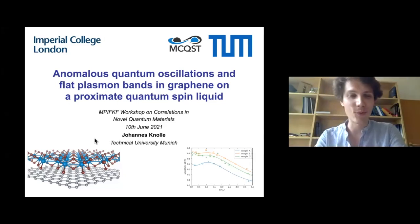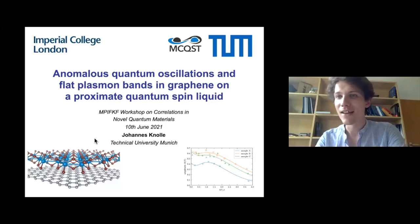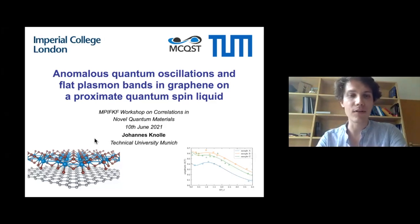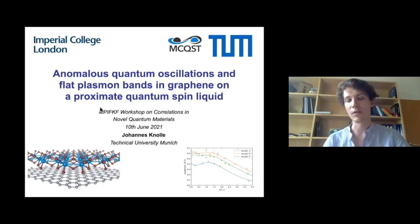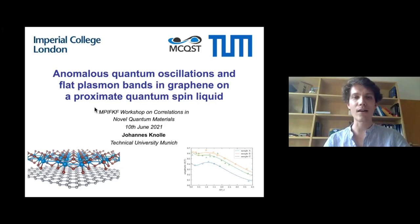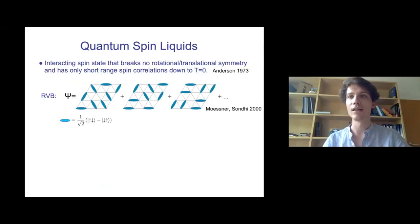Let me thank the organizers for putting together this really nice workshop, which also works very well in this online format. I will pick up on a few topics which have already been presented today and exploit the long introduction yesterday to the Kitaev systems, because my talk will be about a heterostructure of graphene on an approximate spin liquid, related to the work we've heard today on ruthenium trichloride.